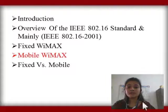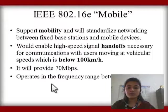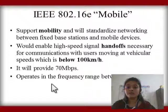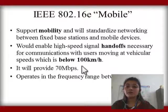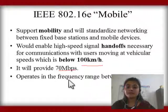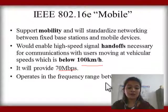The second type is Mobile WiMAX. Mobile WiMAX supports mobility. It has high-speed signaling and handoff. The speed supported is below 100 km/h. It provides 70 Mbps and operates in a frequency range between 2 to 6 GHz.